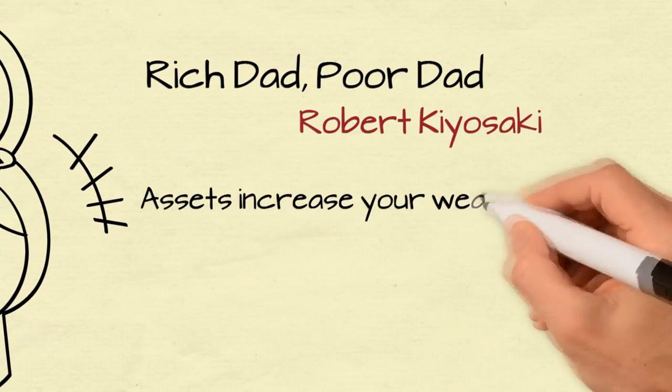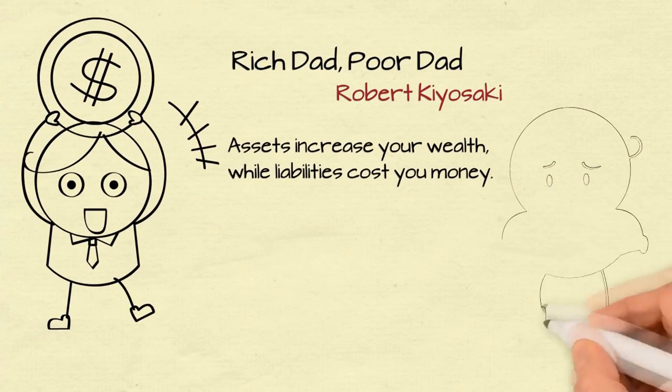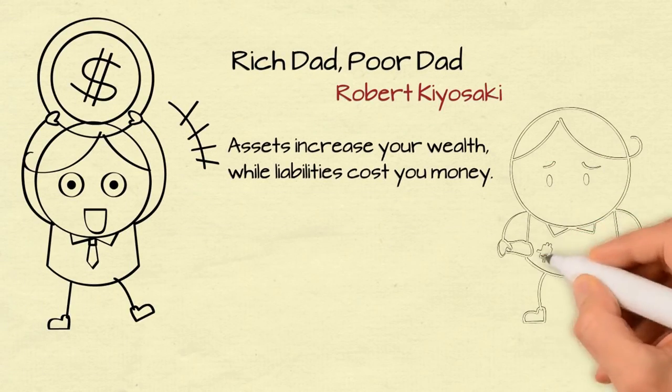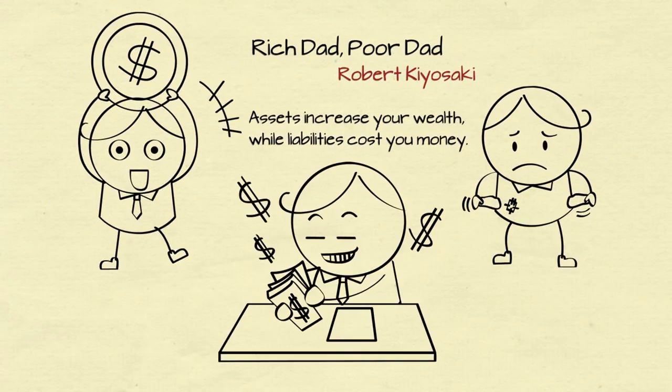Assets increase your wealth while liabilities cost you money, and Robert Kiyosaki concludes that what makes the rich richer and the poor poorer is that the rich spend their money on assets while the poor waste their money on liabilities, which they think of as assets.